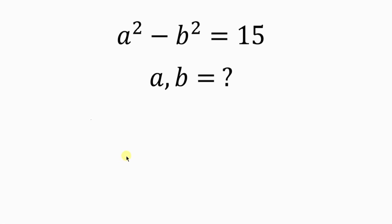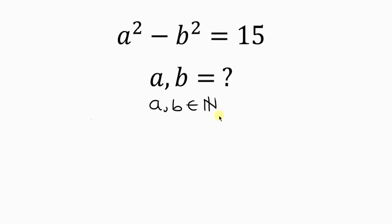Welcome back to my YouTube channel. Let's solve this math question that says: find the values of A and B for which A squared minus B squared is equal to 15. There is a condition attached to this question that says A and B are natural numbers. Let's keep this at the back of our mind as we solve this question.